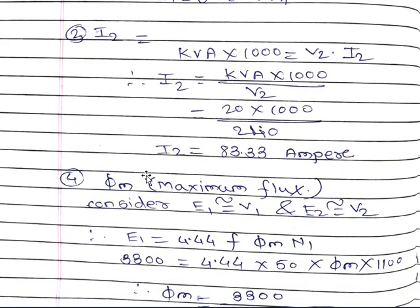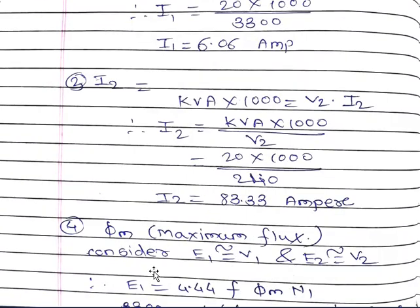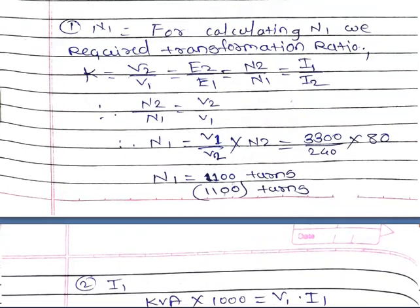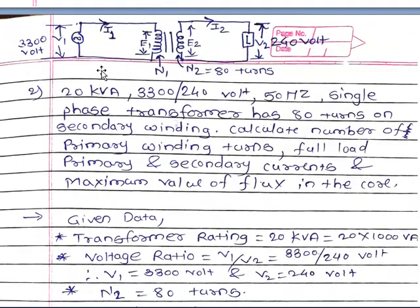Now we calculate the value of φM, that is maximum flux. For calculation of maximum flux we use the formula of E1 or E2. E1 is equal to 4.44 × f × φM × N1. Here E1 and E2 are not separately mentioned, so we take E1 approximately equal to V1 and E2 approximately equal to V2, as this is taken under ideal conditions. In the circuit diagram the transformer primary winding turns are N1 and secondary winding turns are N2.